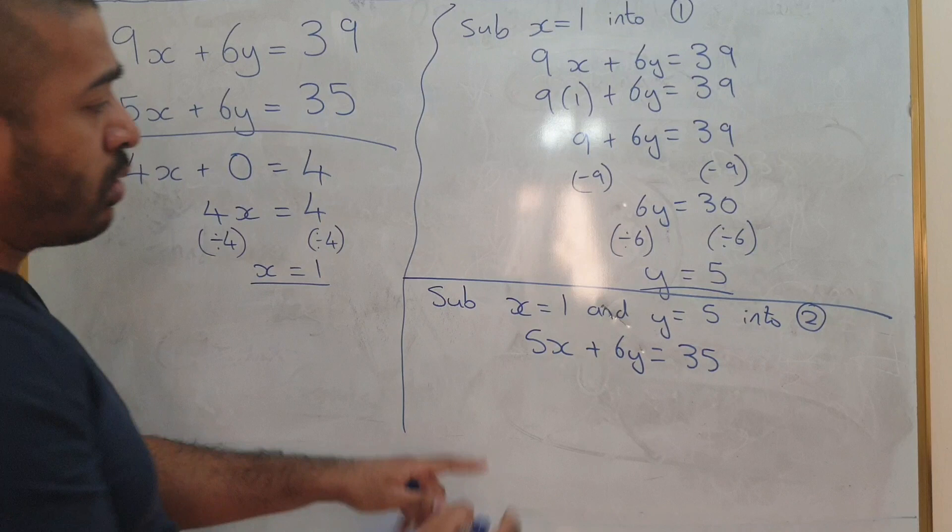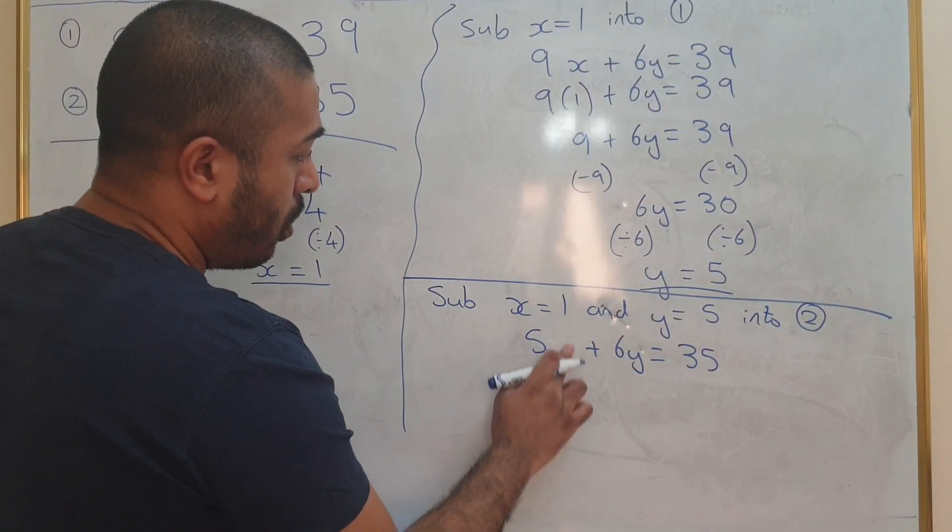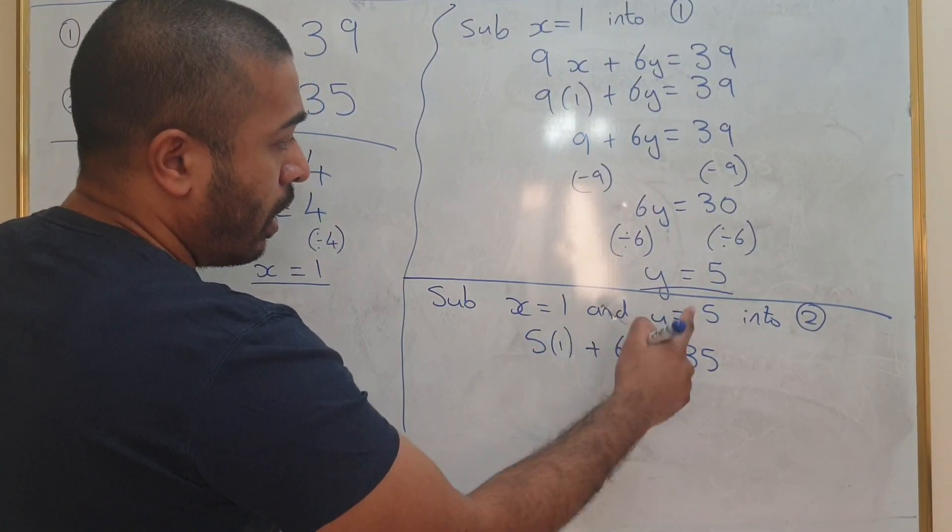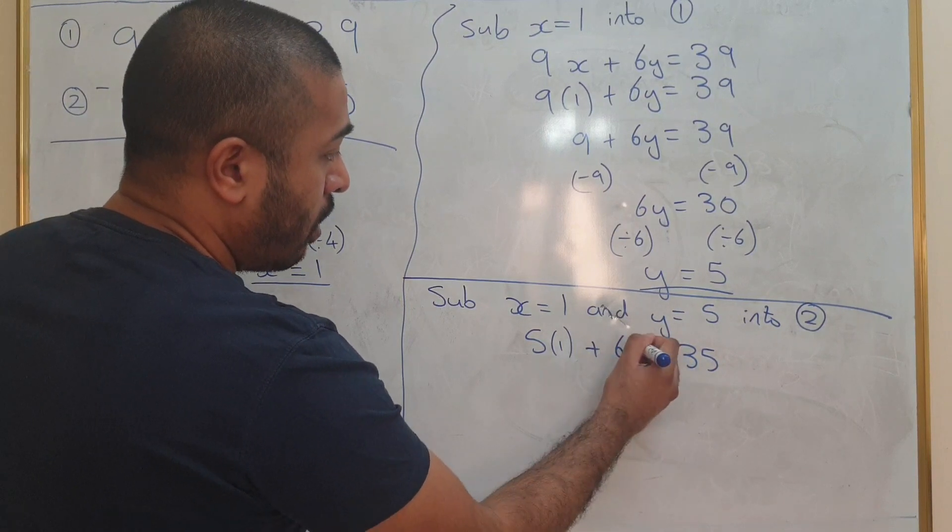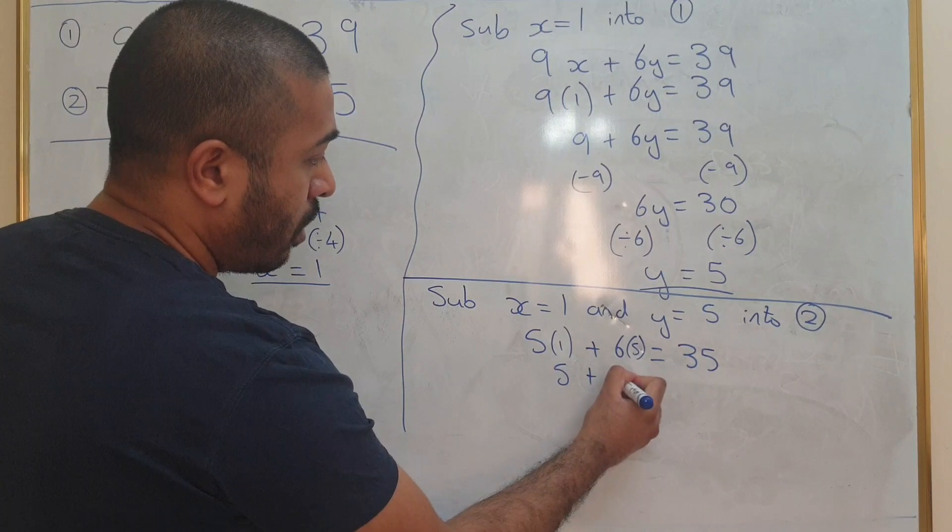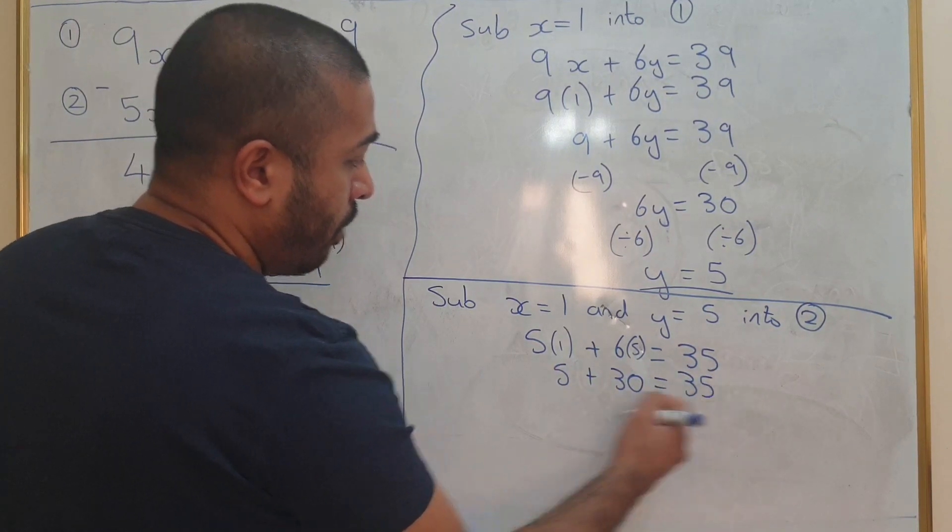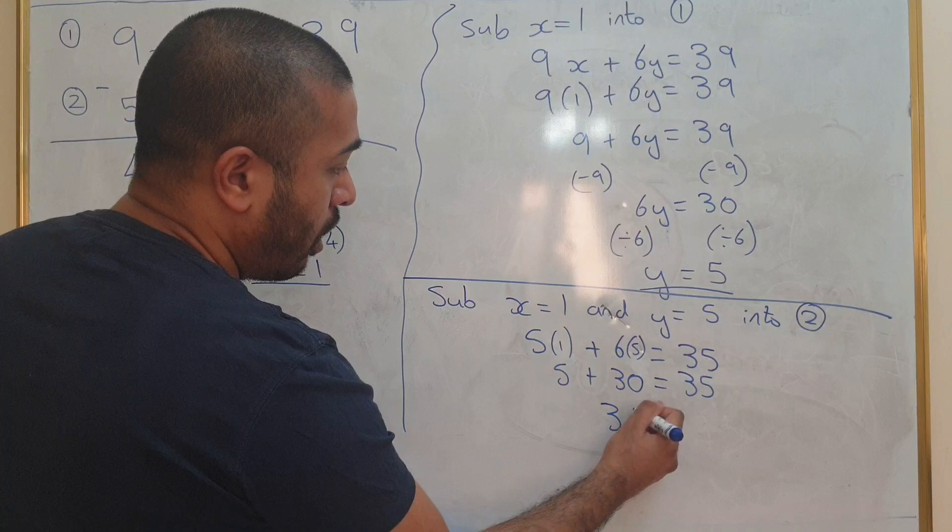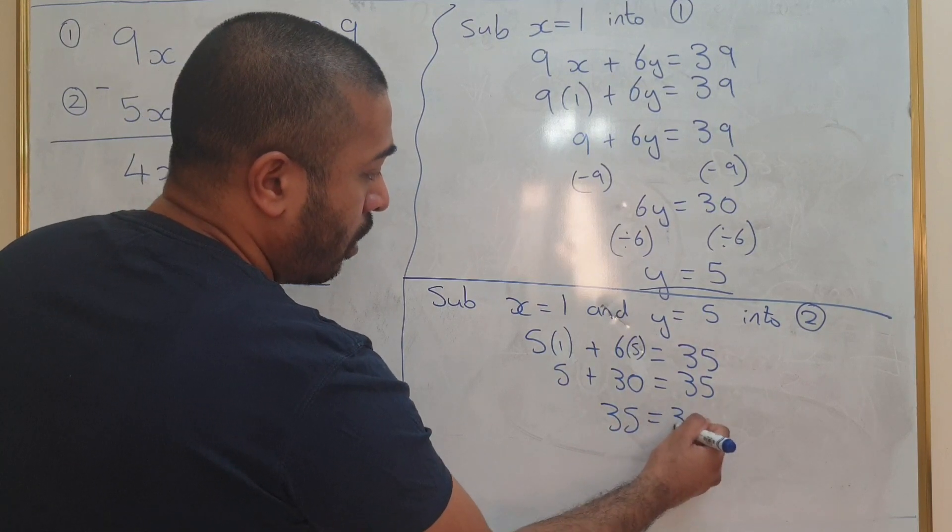I don't have much space, so I'm just going to replace this. So, that's going to be 5 times 1, and y times 5. That's 5 plus 30 equals 35. Once you add these two together, you get 35 equals 35.